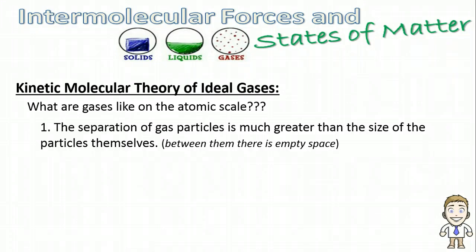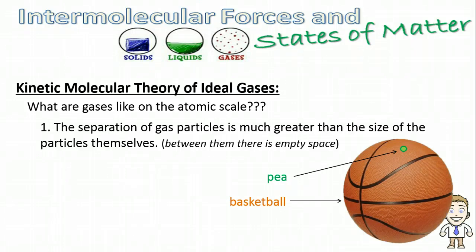The first part of the theory tells us that the separation of gas particles is much greater than the size of the particles themselves. Really, this is just saying that gas particles are few and far between, and between those particles is empty space. To give you some idea of how much empty space, your typical air molecule is said to have as much space to move around in as a pea would inside of a basketball.